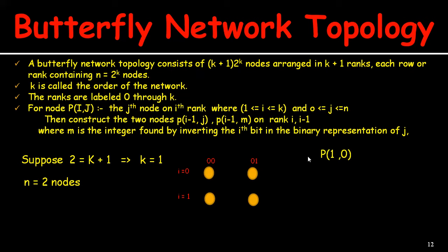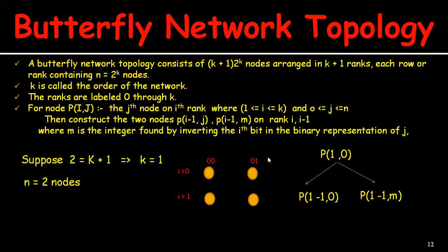For p_(1,0): one connection is p_(1−1, 0) = p_(0,0), and the other is p_(0, m). To find m: j = 0, represented in two bits as 0,0. We invert the i-th (first) bit: 0 becomes 1, giving 0,1, which has value 1. So m = 1. The connections are: this node connects to (0,0) and (0,1).